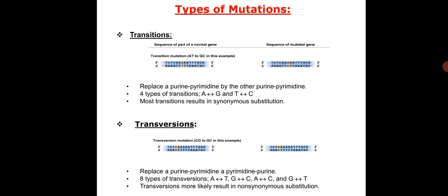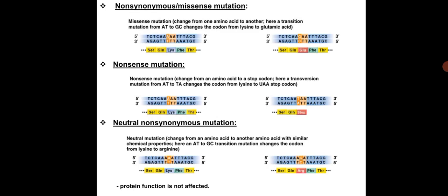In transversions, a purine is replaced by a pyrimidine or a pyrimidine is replaced by a purine, such that adenine can be replaced by thymine and vice versa, or guanine can be replaced by cytosine and vice versa. Transversions mostly result in non-synonymous substitution. Both transitions and transversions fall under the category of point mutations.